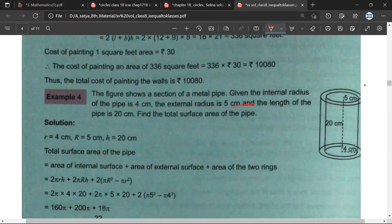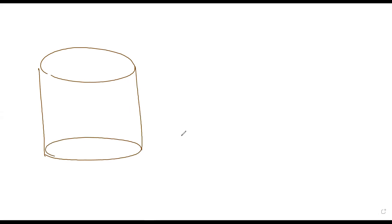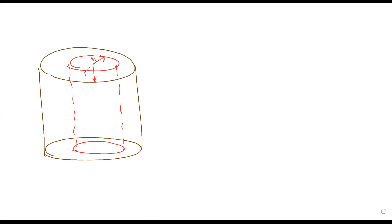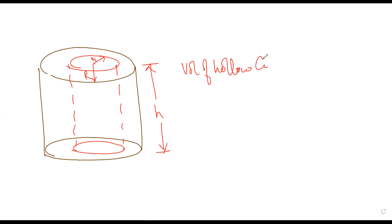For example, if you look at this problem, this is basically a pipe. We have discussed this before but let us discuss this again because we'll be doing a numerical also. This can be called a pipe or it can be called a hollow cylinder. The problem can come in any shape but usually this is how it comes. This is the internal radius, this is the outside radius, and this would be the height. Usually they will ask you the volume of the hollow cylinder.